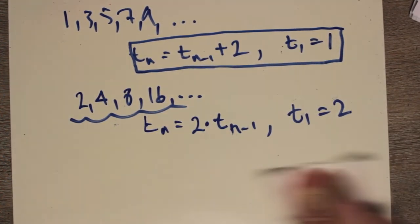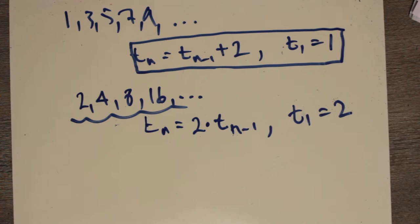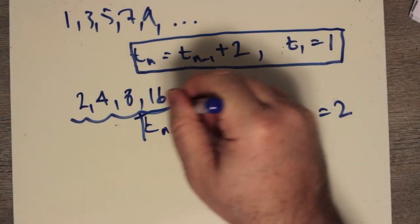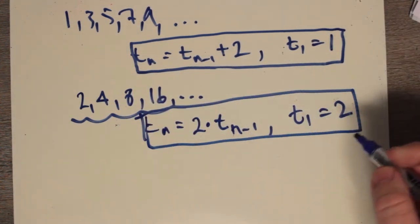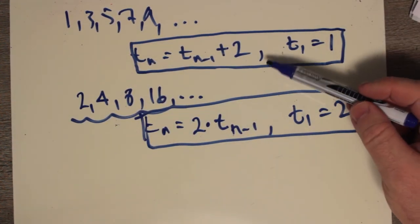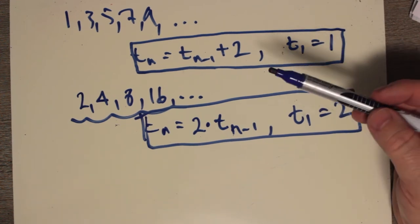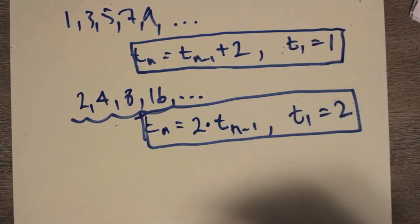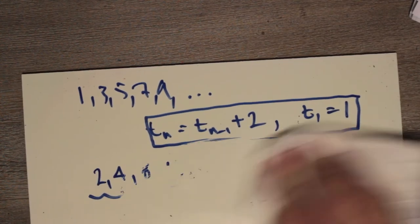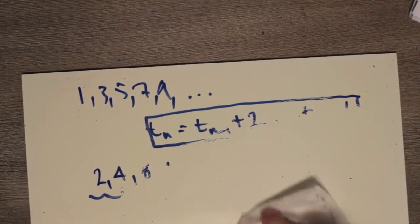So those are the kinds of recursion that you already know about. You do know about them, but you knew about them through calling them arithmetic and geometric sequences and through using a different formula. But now, these are what we call recursive formulas. They're recursive formulas that generate the same sequences. But of course, there are other kinds of recursion.